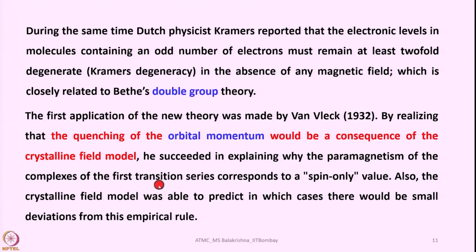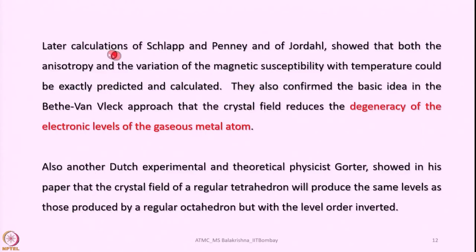Crystal field theory explains, involving orbital momentum, the small variations observed in magnetic properties. Later, calculations by Schlapp and Penney, and by Jordahl — all physicists — showed that both anisotropy and the variation of magnetic susceptibility with temperature could be exactly predicted and calculated using crystal field theory.